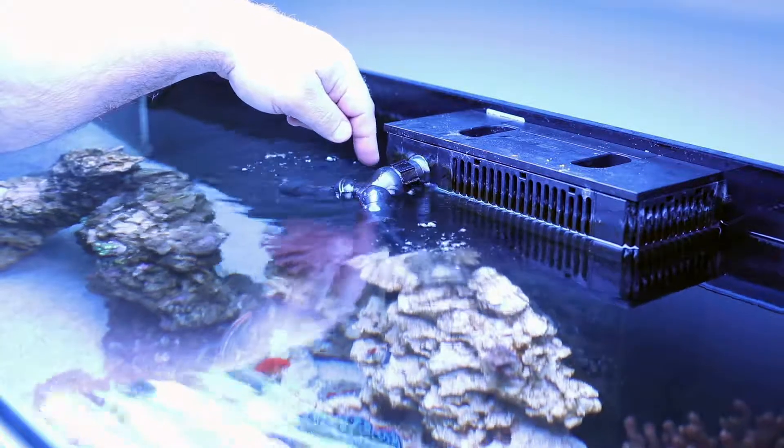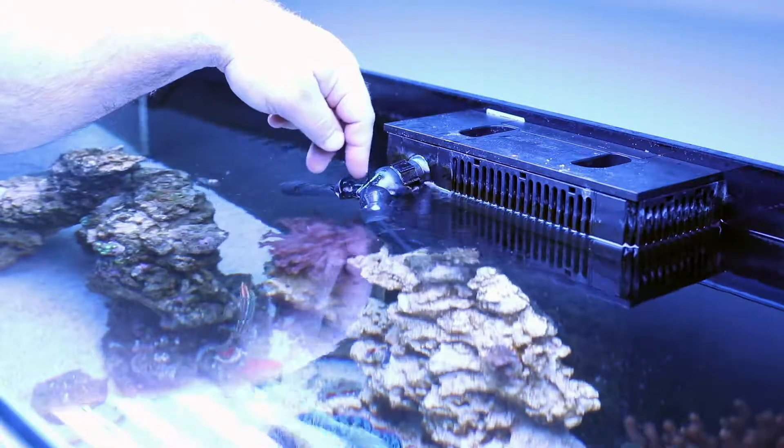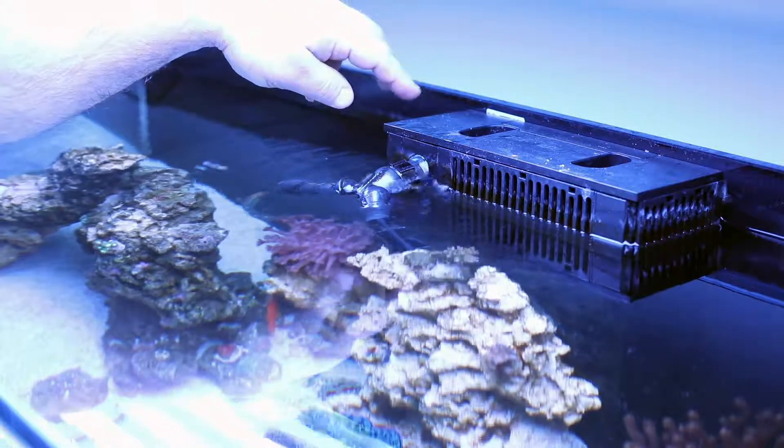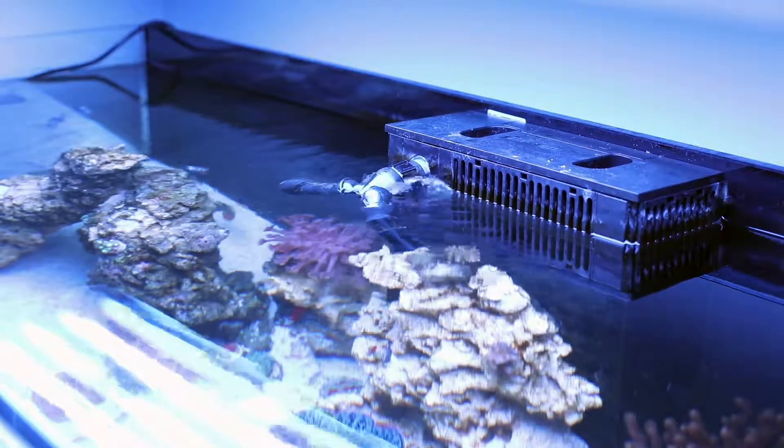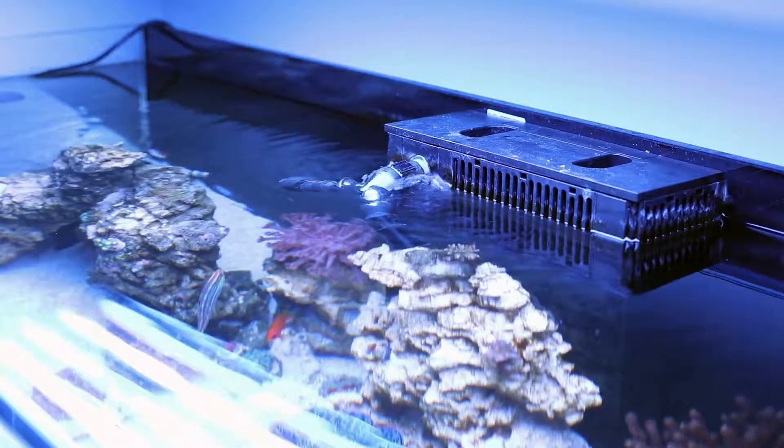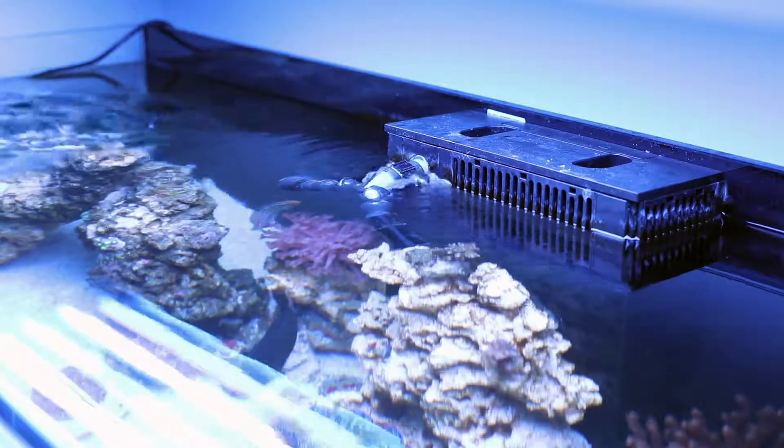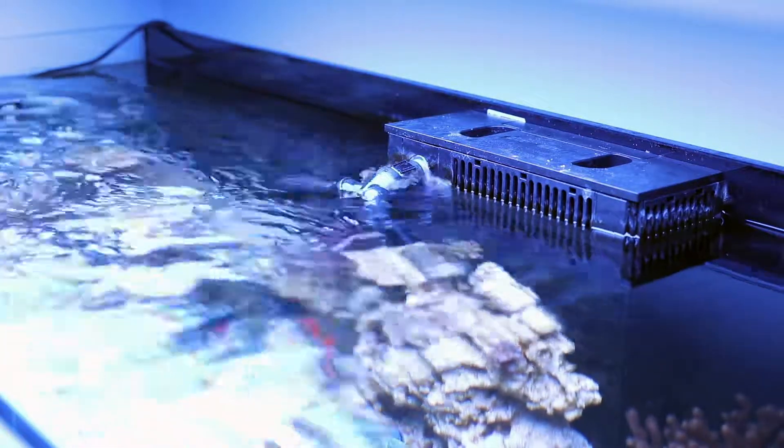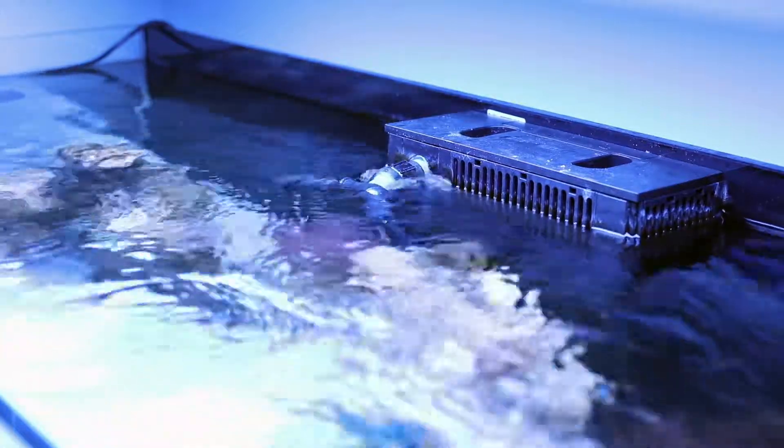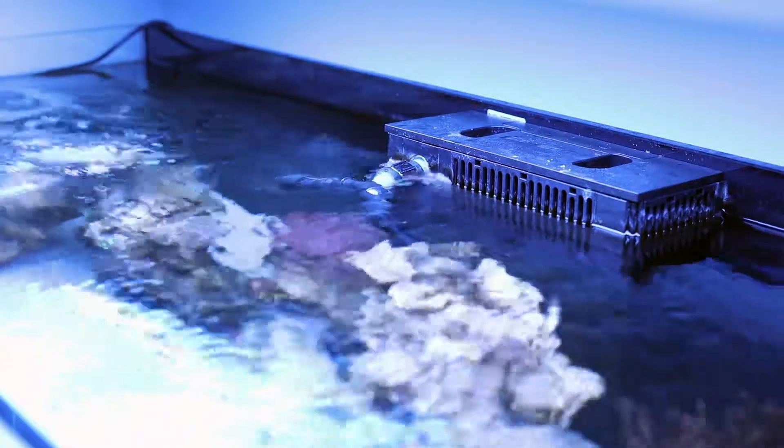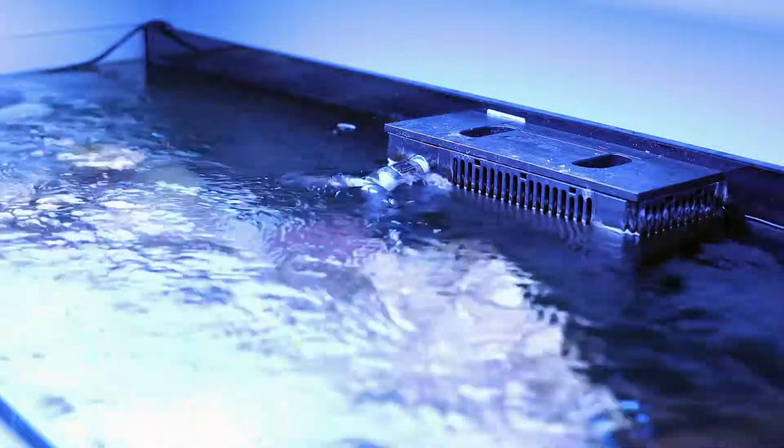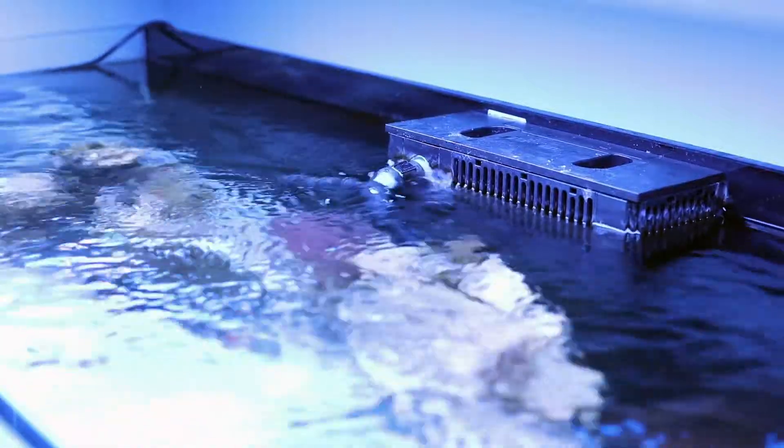Some air comes through and then you can see the water coming back up. It's not a noticeable amount of flow, it's just enough to break the siphon with the air. Once we add the Maxspect gyres back in, now we get a surface ripple. You barely notice it's there.